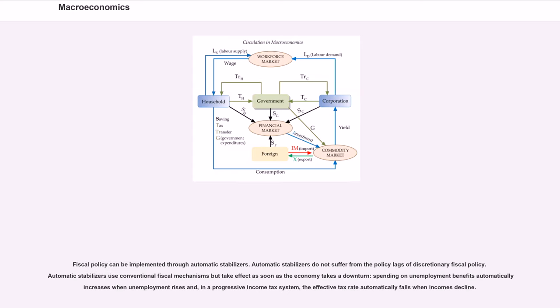Fiscal policy can be implemented through automatic stabilizers. Automatic stabilizers do not suffer from the policy lags of discretionary fiscal policy. Automatic stabilizers use conventional fiscal mechanisms that take effect as soon as the economy takes a downturn. Spending on unemployment benefits automatically increases when unemployment rises and, in a progressive income tax system, the effective tax rate automatically falls when incomes decline.